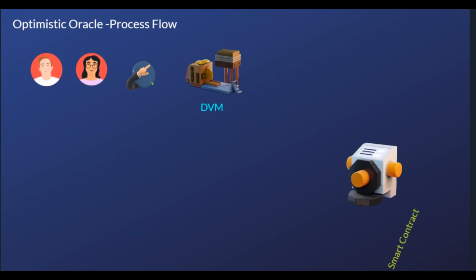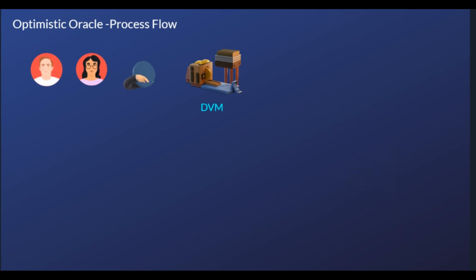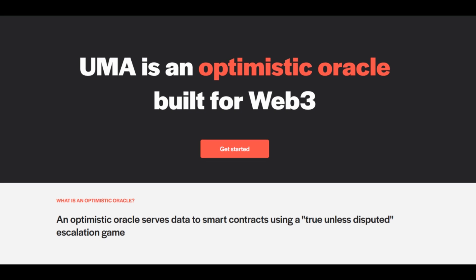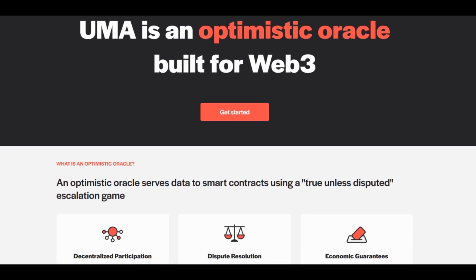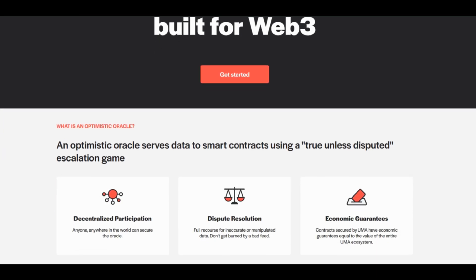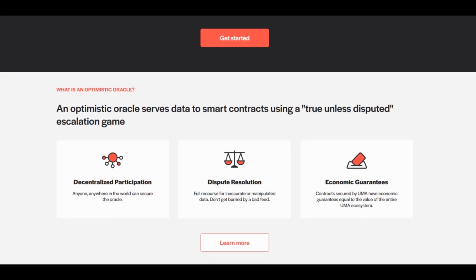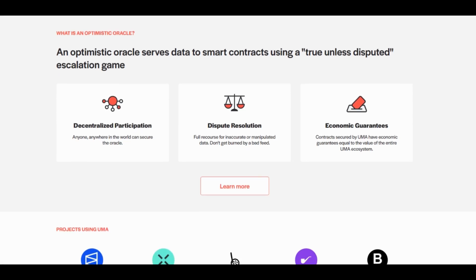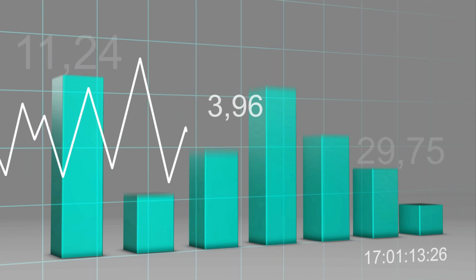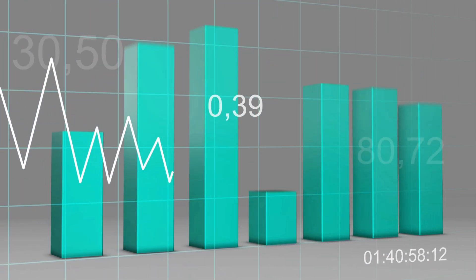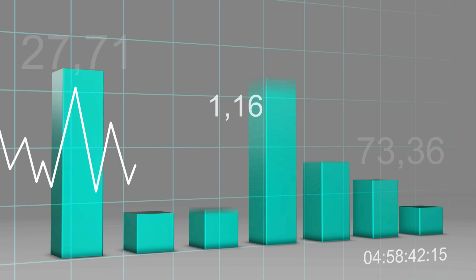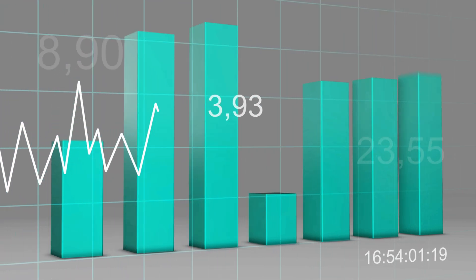To sum up, UMA is one of the top projects hosted on the Ethereum blockchain with a relevant use case and strong utility. UMA, which stands for Universal Market Access, is an optimistic oracle that secures markets and smart contracts across Web3. Cryptocurrencies are highly volatile, so your cash can go down as well as up in the blink of an eye. As always, you should never invest in something you don't understand.